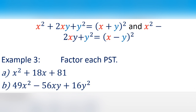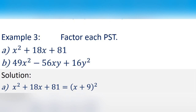Sample number 2: factor x squared plus 18x plus 81. Step one: get the square root of the first and last terms. Square root of x squared is x, and square root of 81 is 9. Step two: use the sign of the middle term, which is positive. Check: 2 times x times 9 equals 18x — confirmed. Therefore, x squared plus 18x plus 81 equals the square of x plus 9.